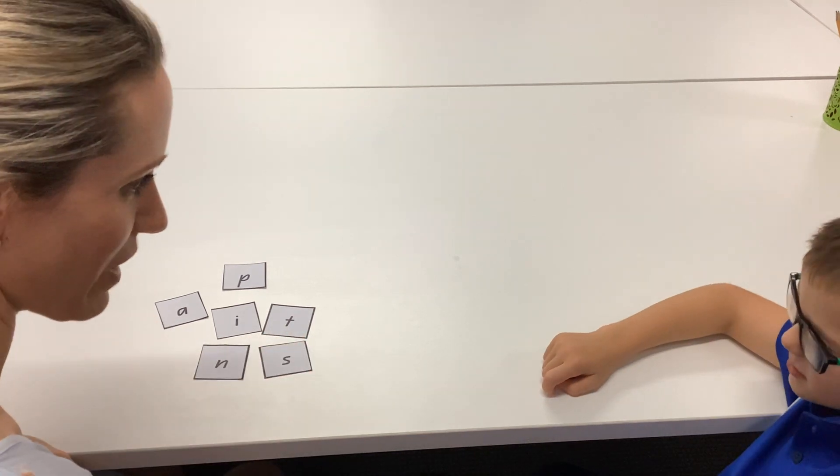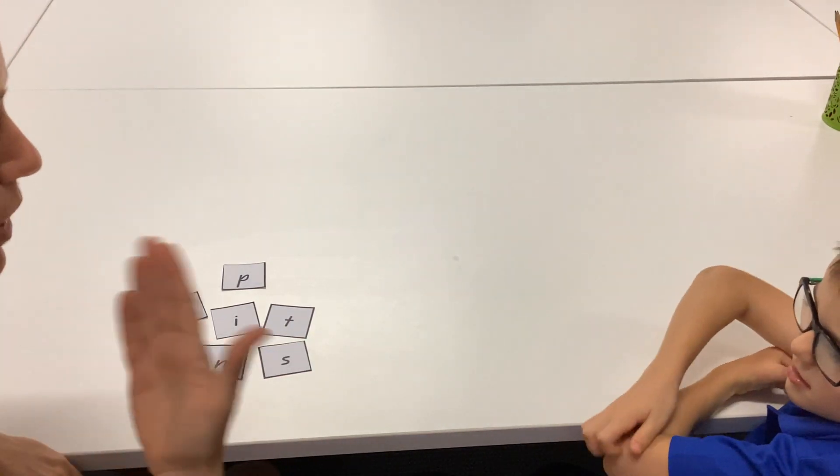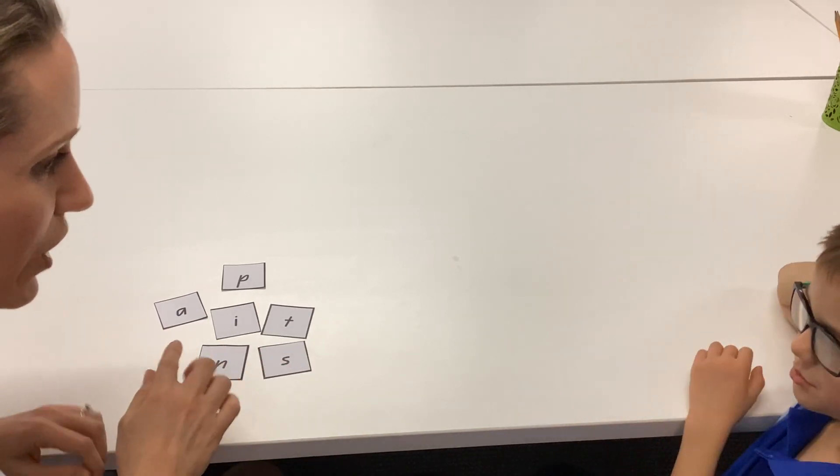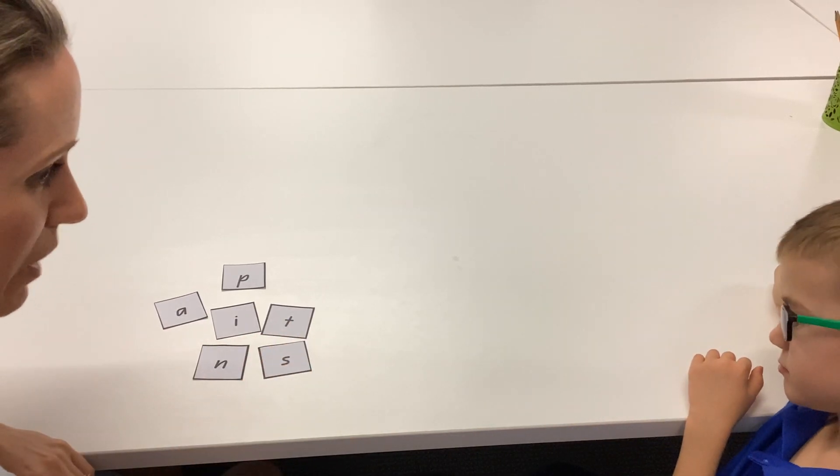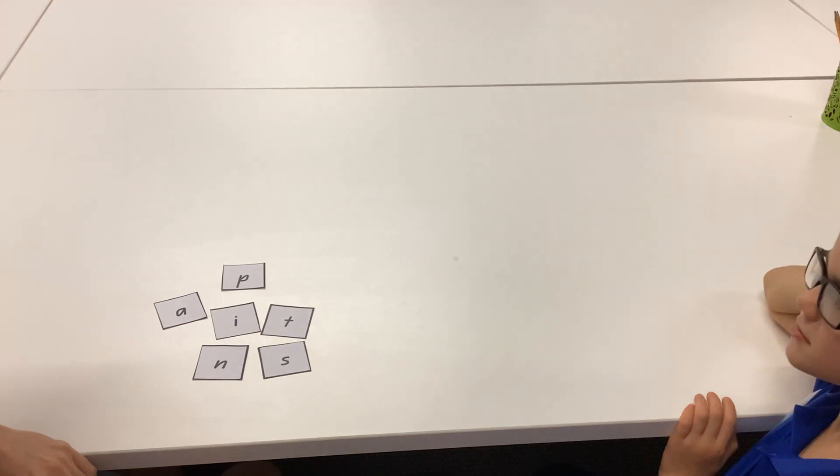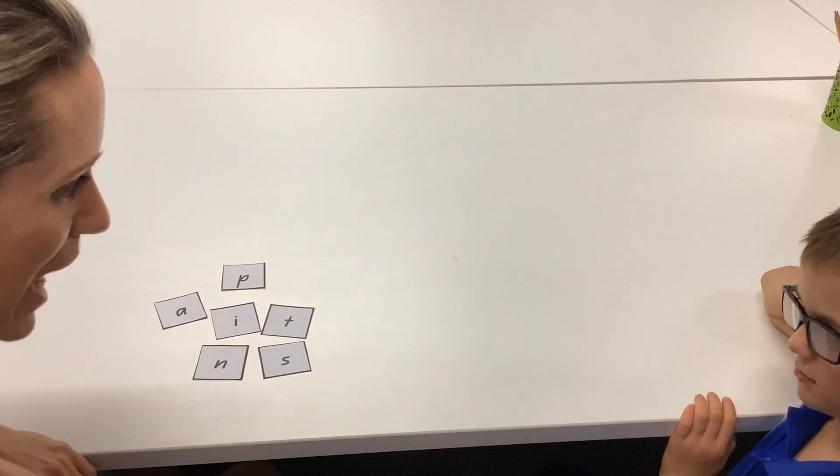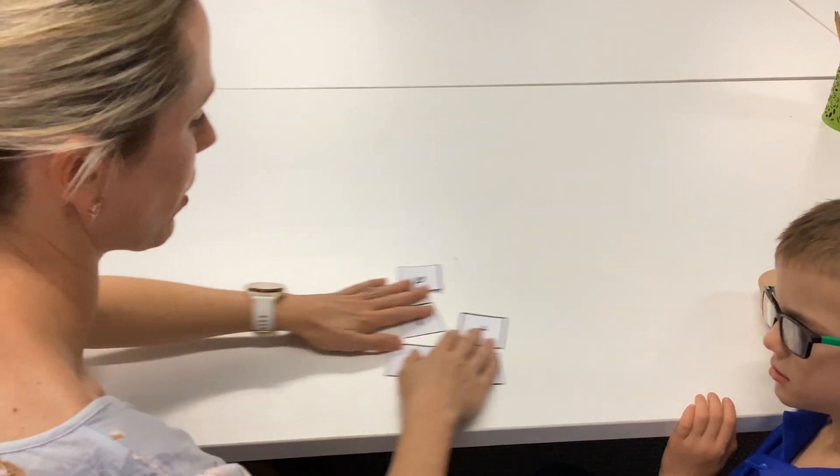Alright, now, last activity, activity three. I'm going to say a word. I'm going to get you to say the word after me and then you'll get to move the cards to try and make that word. Ready? Can you say this word after me? Can you say tap? Tap. Your turn now, can you see if you can make the word tap?